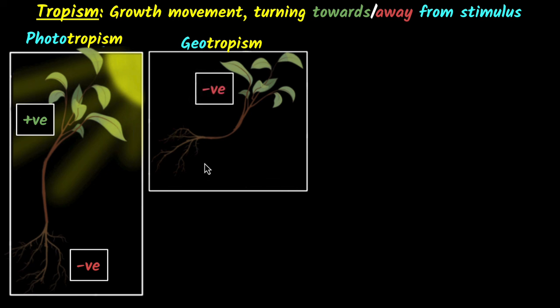Whereas look at the roots, they're going towards the earth in the direction of gravity downwards. So the roots are displaying positive geotropism.